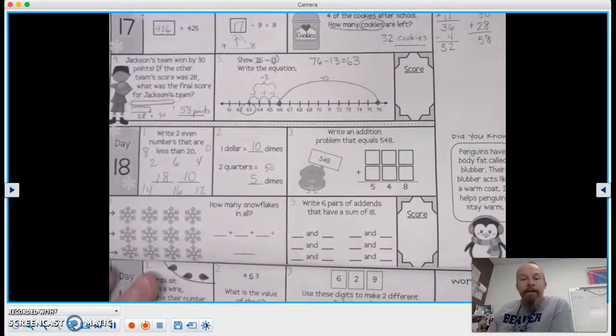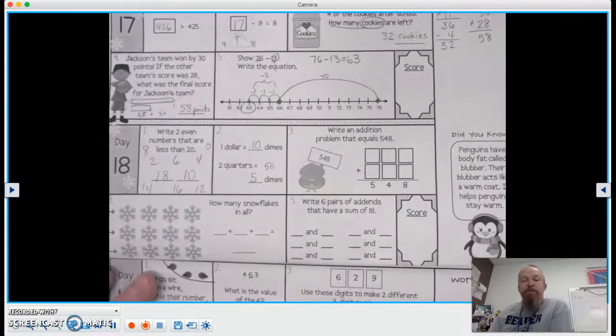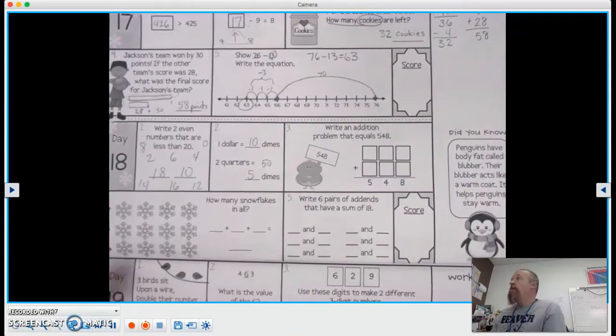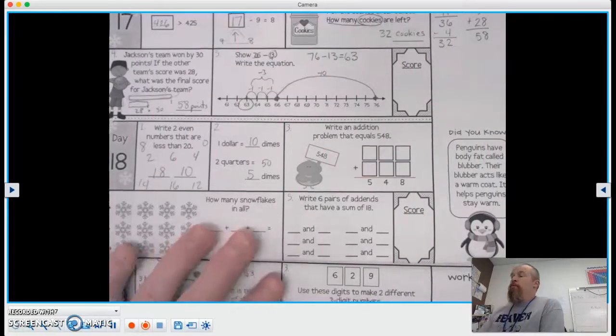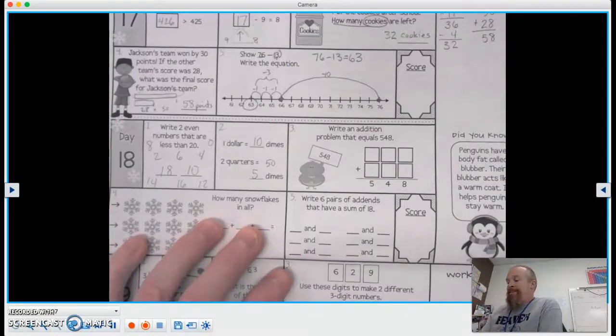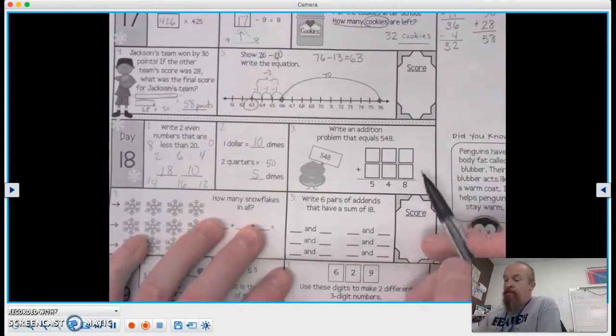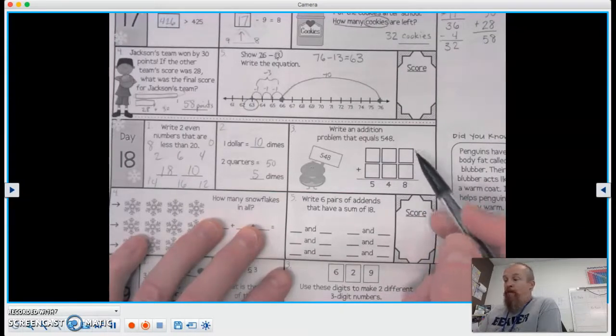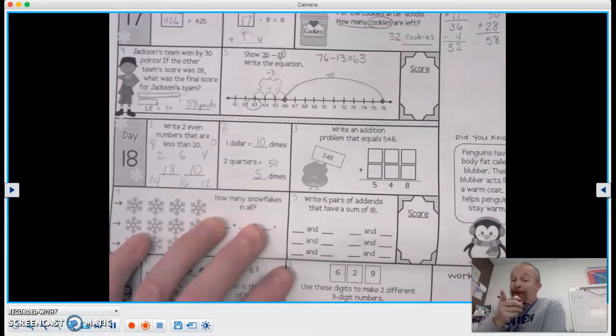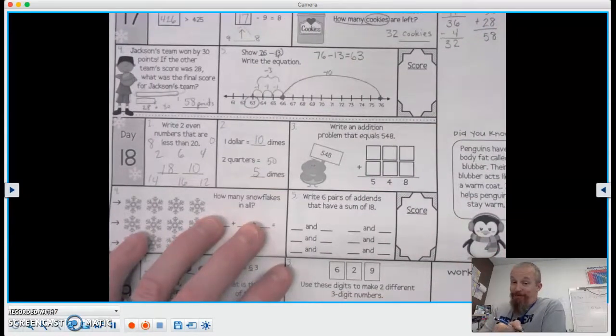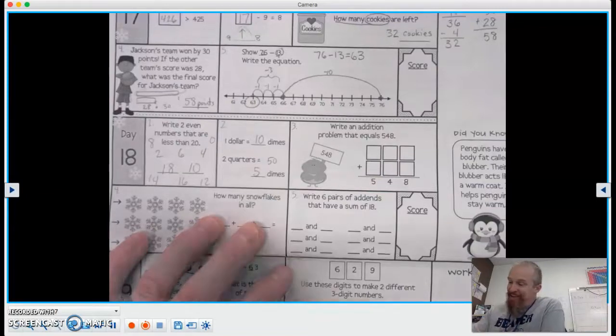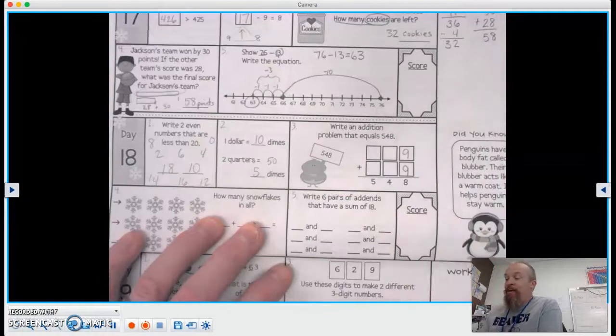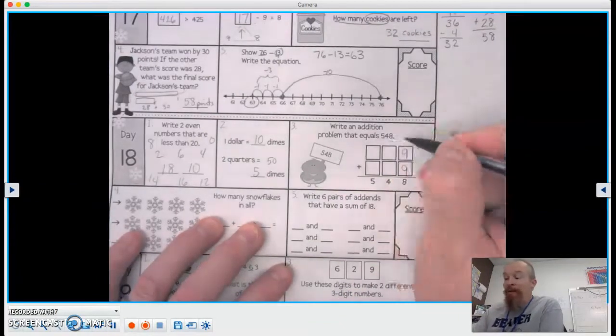Number three, write an addition problem that equals 548. What plus what equals 8? We could do 0 and 8, 1 and 7, 2 and 6, 3 and 5, 4 and 4. We could also do 9 and 9, couldn't we? So I'm going to go 9 and 9 right here. Now 9 plus 9 equals 18, so I got a 1 up here.